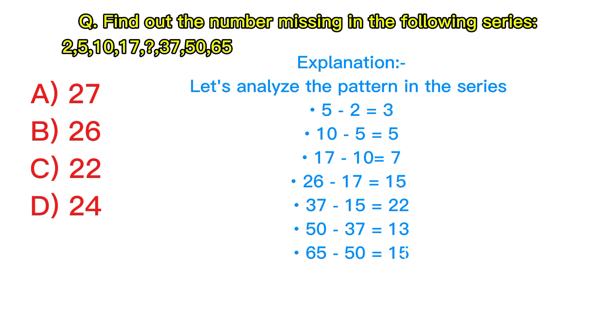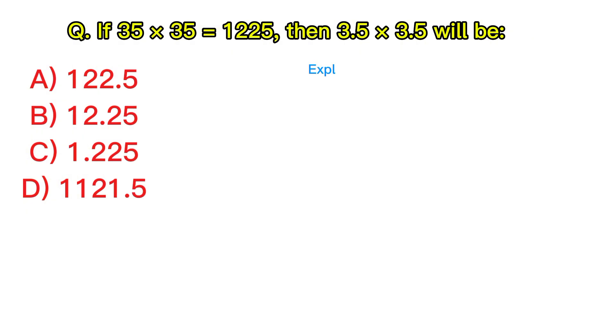If 35 times 35 equals 1225, then 3.5 times 3.5 will be? Explanation: 3.5 times 3.5 can be calculated as 35 times 35 divided by 10 times 10, equals 1225 divided by 100, equals 12.25. Answer: B, 12.25.